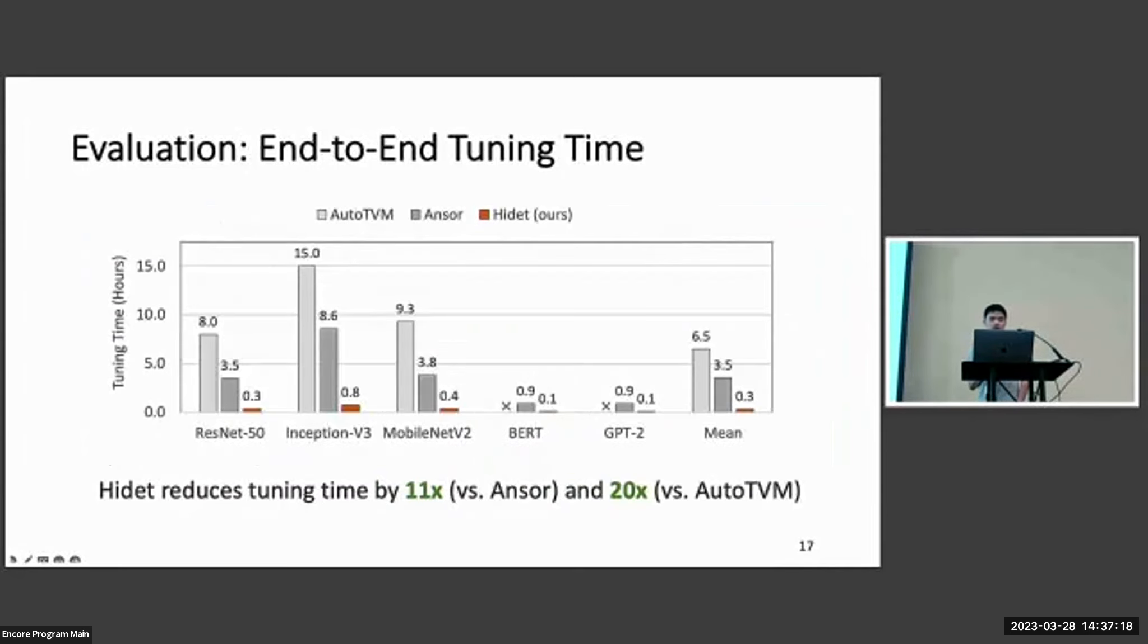We also compare the tuning time with the two schedulers in TVM, AutoTVM and Ansor. Basically, we can reduce the tuning time from hours or tens of hours to tens of minutes. And on average, we can achieve 11 times reduction compared with Ansor and 20 times reduction in the tuning time compared with AutoTVM.